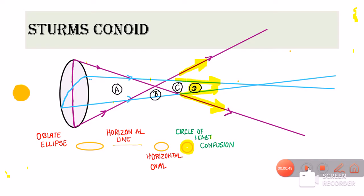If this circle of least confusion is present on the retina, the patient will still have better vision compared to the points A, B, or C on the retina. If somehow point D — the circle of least confusion — comes onto the retina of the astigmatic patient, they will also have relatively good vision.